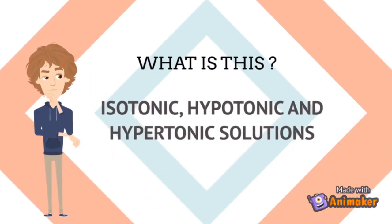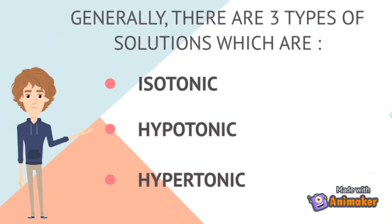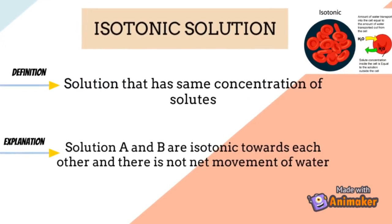Now we will move to isotonic, hypotonic, and hypertonic solutions. Generally, there are three types of solutions: isotonic, hypotonic, and hypertonic. An isotonic solution has the same concentration of solutes between two solutions — for example, solutions A and B are isotonic to each other, meaning there is no net movement of water, as both solutions have the same solute concentrations.